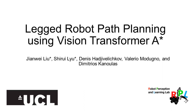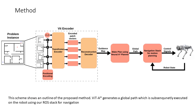We introduce our latest work on legged robot path planning using Vision Transformer A-Star. Our method offers global path planning capability using a Vision Transformer architecture to generate a learned heuristic guidance map.